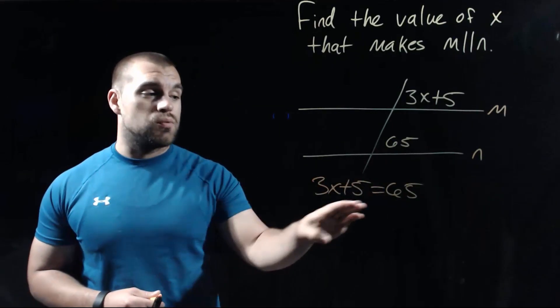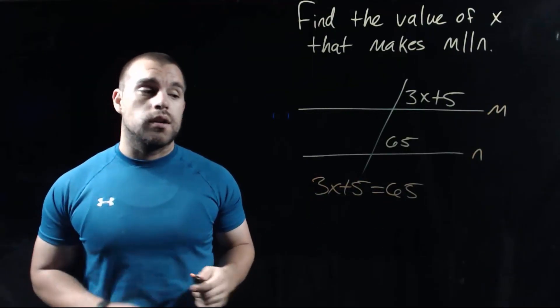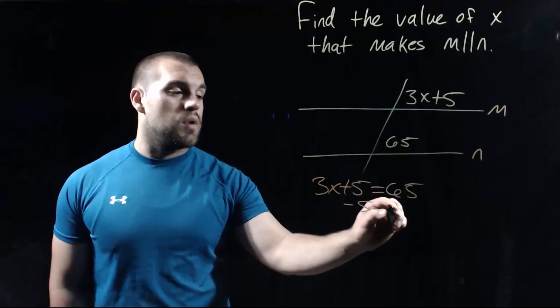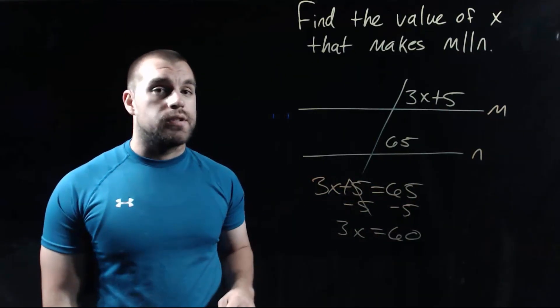Since we need these things to be the same size, we're going to set them equal to each other. So 3x plus 5 equals 65. And then we're going to start solving. So I'm going to subtract the 5 from each side. When we do that, we get 3x equals 60.